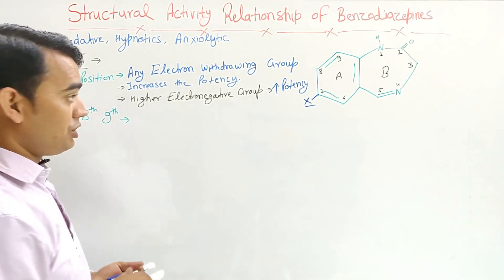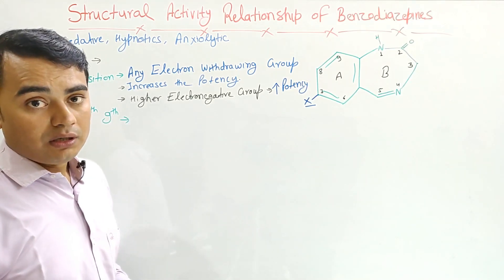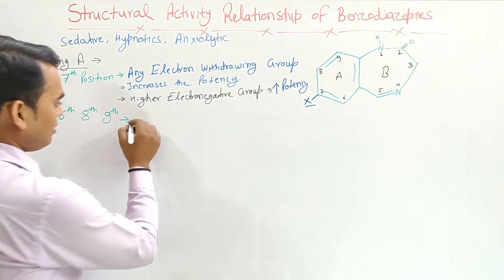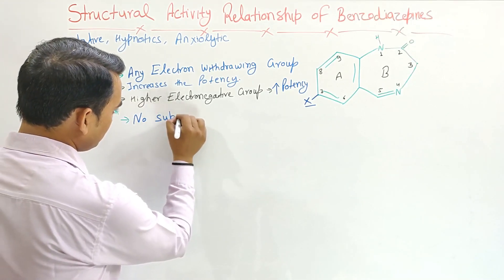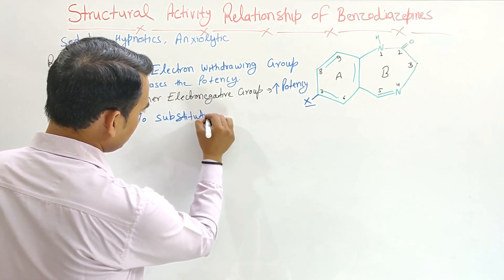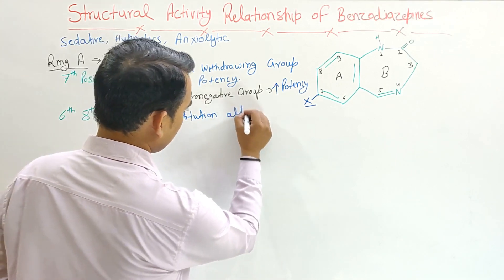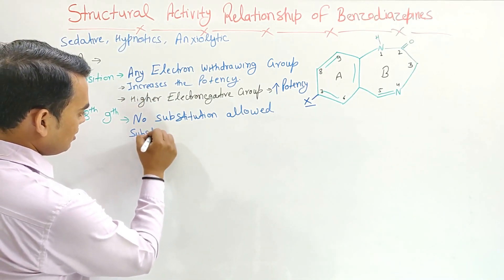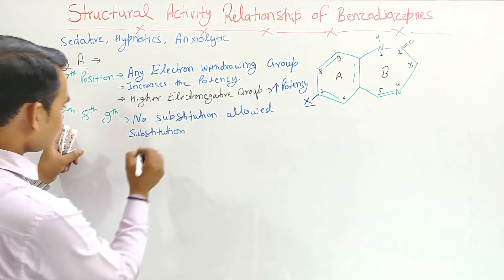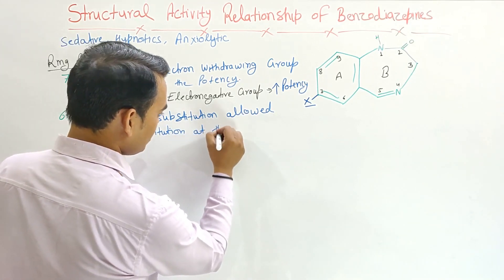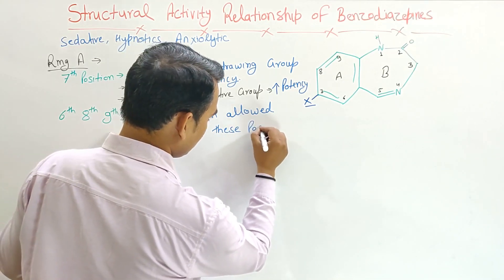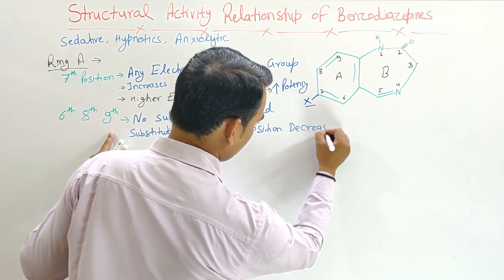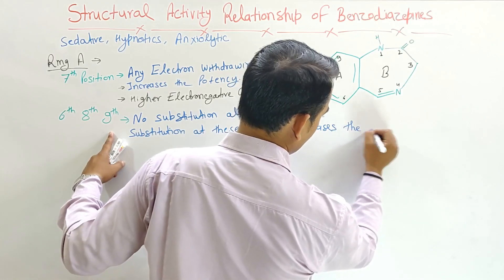At positions 6, 8, and 9, no substitutions are allowed, because if we substitute at these positions, the activity will definitely be reduced. Substitution at positions 6, 8, and 9 decreases the activity.